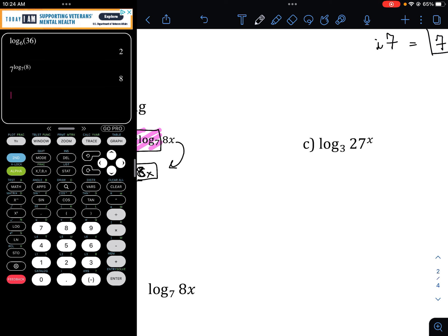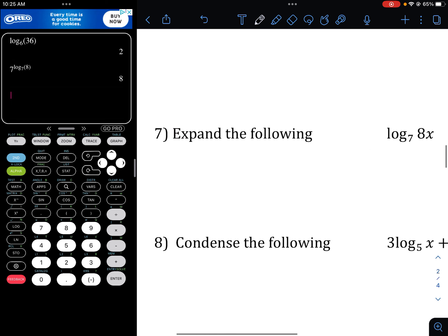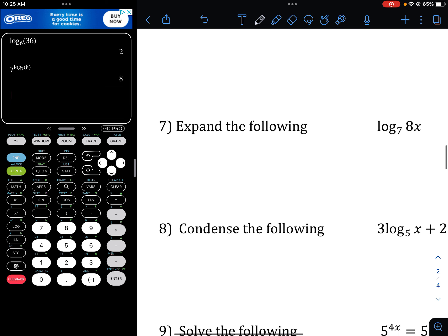Similar here. So, let's see what we have. We have log base 3. 27 is actually 3 to the third power x. So, 3 to the third power with that x there. Similar phenomenon happens. Log 3 of 3 is going to cancel. And that's just going to leave 3x. So, those little patterns happen as well.